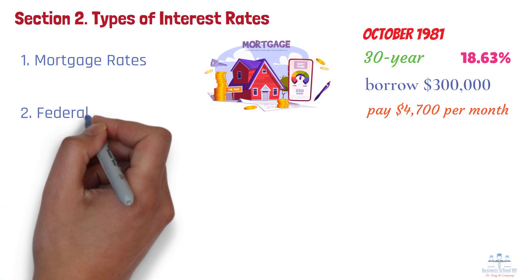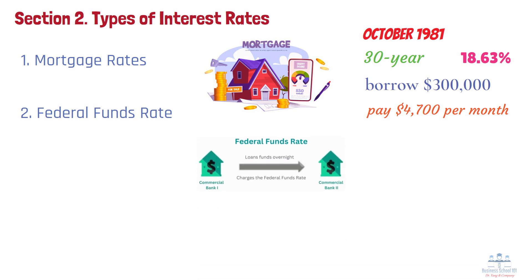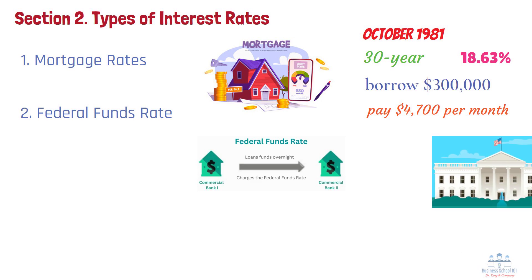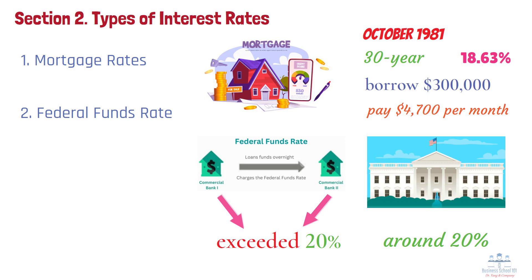The federal funds rate is the interest rate at which banks lend to each other overnight. In the early 1980s, to combat inflation, the Federal Reserve raised the federal funds rate to a historic high of around 20%. When this happened, banks correspondingly increased their lending rates. Credit card interest rates even exceeded 20%, making borrowing significantly more expensive.